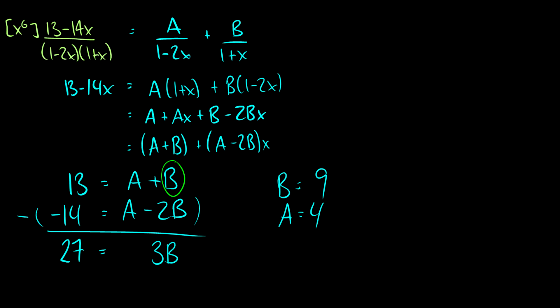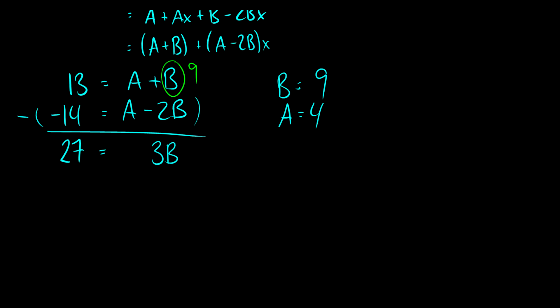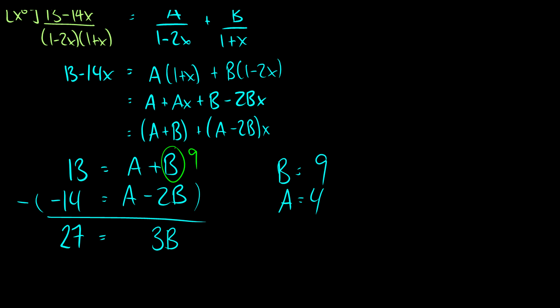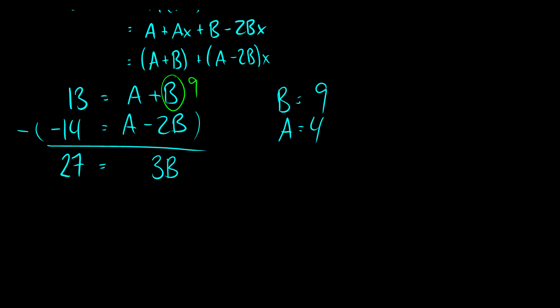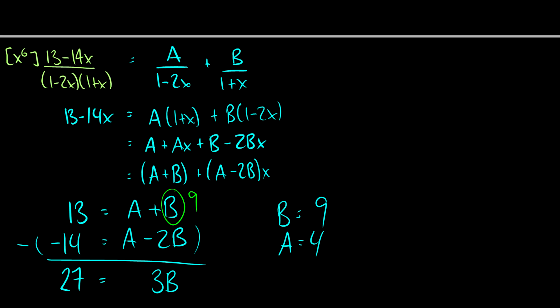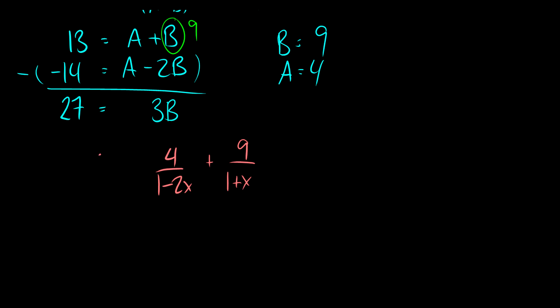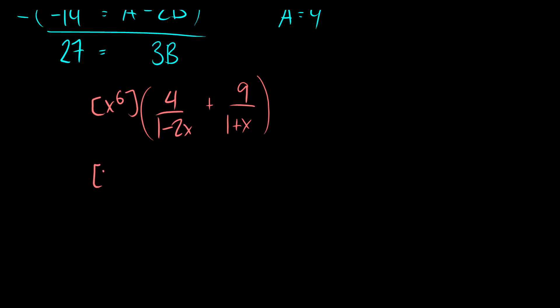I'm just plugging 9 into this B here and then solving for A. So what we get is 4 over 1 minus 2x plus 9 over 1 plus x. And we want x to the 6 of this. So what we'll do is say this is really just taking the sixth coefficient of 4 over 1 minus 2x and then we add the sixth coefficient of 9 over 1 plus x. Well, this is really the same as saying I want 4 times the coefficient of 1 over 1 minus 2x plus 9 times the sixth coefficient of 1 over 1 plus x.